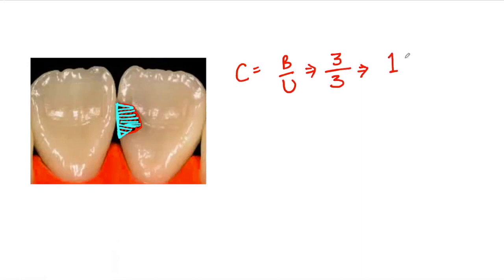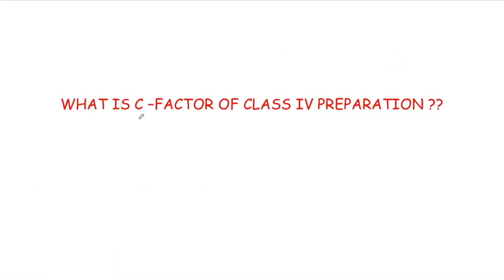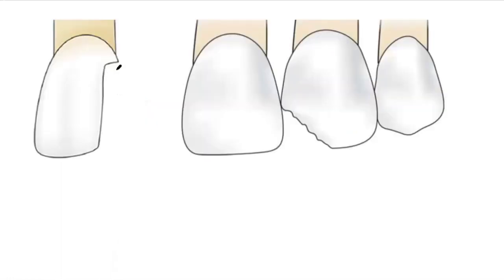So in total we'll have 3 unbonded surfaces, which makes the C factor equal to 1. If you remember, this is similar to our MOD cavity, which also has a C factor equal to 1. Now let's calculate the C factor for class 4 composite restoration. The class 4 cavity preparation involves the proximal surface of anterior teeth involving the incisal angle, and this involvement can be of two types: rectangular type and triangular type.